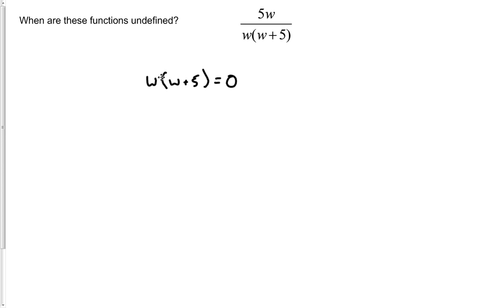Now since either of these multiplied factors can be set equal to zero, let's go ahead and split it up. We have w equals zero, or w plus 5 equals zero. With the w equals zero, it's already solved for us, because there's really nothing else we can do. We have our value of zero. Here we can subtract 5 from both sides, and w is going to equal negative 5. So our two values for this one that are going to cause the function to be undefined are w equals zero or negative 5.